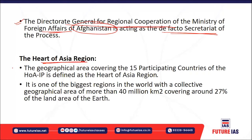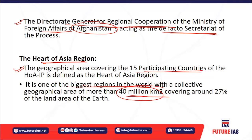The Istanbul Process is a platform for promoting regional security, economic, and political cooperation centered on Afghanistan — a restive country where Taliban governance and terrorism are rampant. The process focuses on resolving Afghanistan's problems through dialogue, confidence-building measures, and maintaining peace and neutrality on Afghan soil. The Directorate General of Regional Cooperation of Afghanistan's Ministry of Foreign Affairs acts as the de facto secretariat. The Heart of Asia region covers 15 participating countries with a collective geographical area of around 40 million square kilometers, corresponding to the largest region in the world.